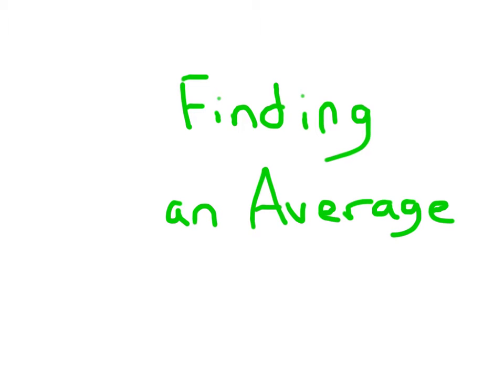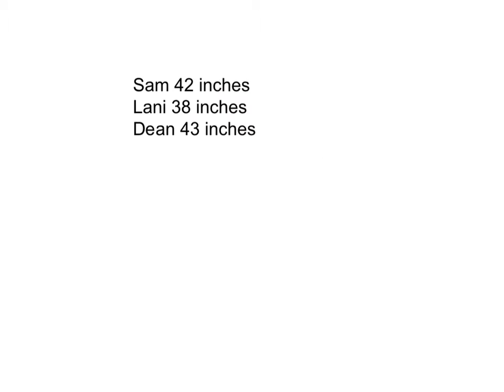Let's look at finding an average. For this problem I'm giving three heights as to how tall these people are. Sam's 42 inches tall, Lonnie is 38 inches tall, and Dean is 43 inches tall.